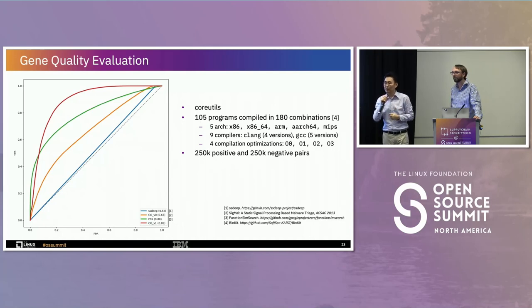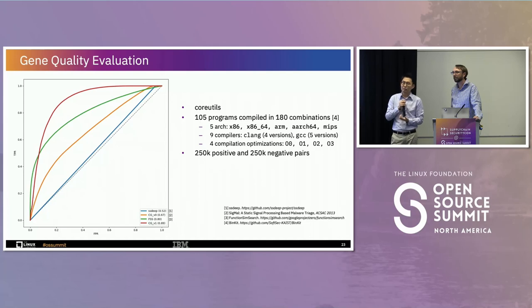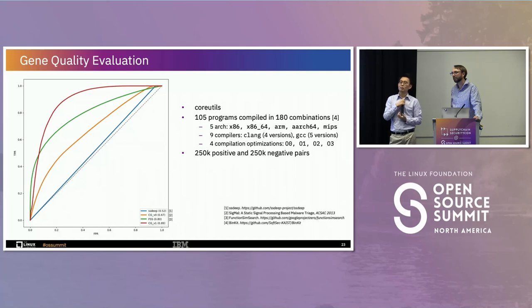An interesting suggestion: if you could evaluate the genome for individual functions and package those genes with the binary delivery, then anyone could construct parts of the graph and evaluate it themselves without necessarily centralizing it. That's a good comment and worth exploring.